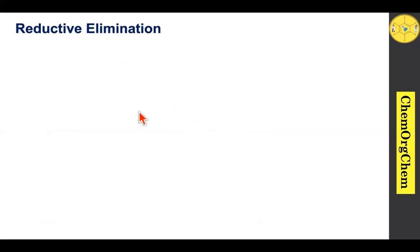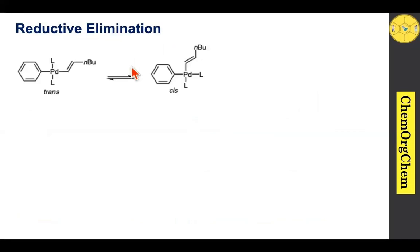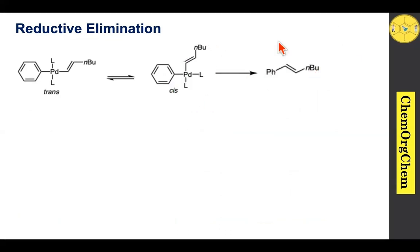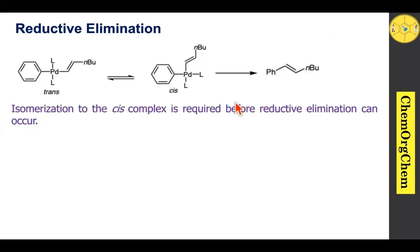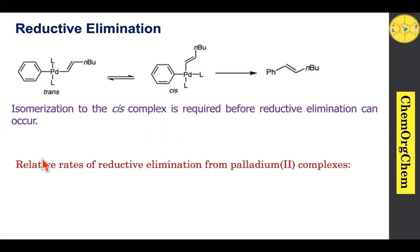Reductive elimination is essentially the reverse of oxidative addition. Initially the trans complex, under reaction conditions, readily converts to the corresponding cis form. After formation of the cis form, reductive elimination occurs to produce the carbon-carbon coupling product. Notably, isomerization to the cis complex is required before reductive elimination can occur.